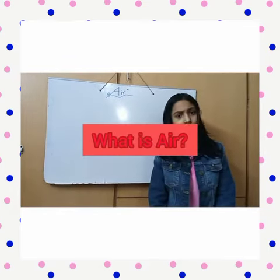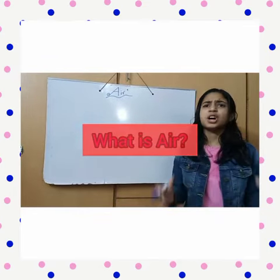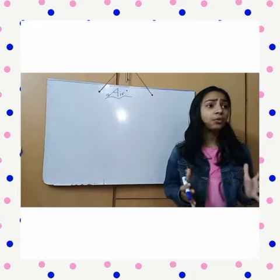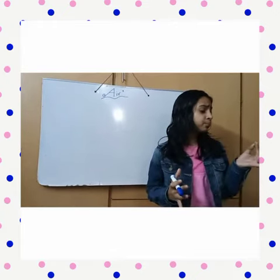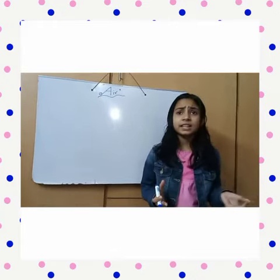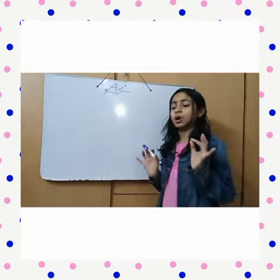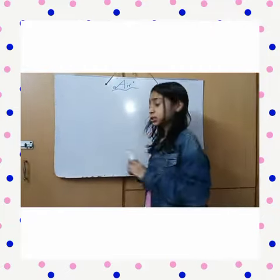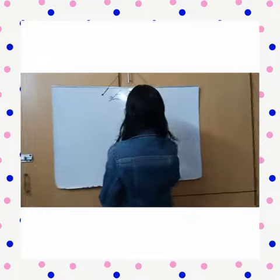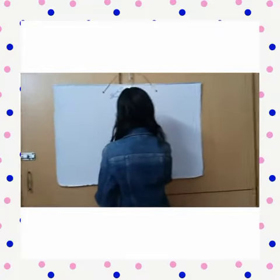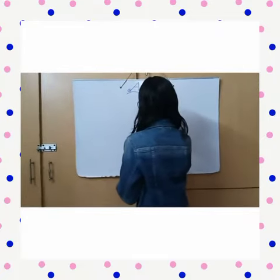First question: what is air? Air is a mixture of different types of gases — for example, nitrogen, helium. In our atmosphere there are different kinds of gases. So our air is made up of different kinds of gases.